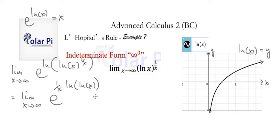And this is the correct rewriting. And then now, by using the limit rule that I used in example 3 and example 5 and 6, I could do the following, which is e to the limit as x goes to infinity of 1 over x times ln of ln of x.